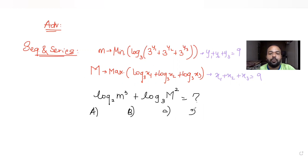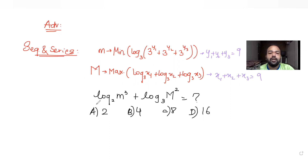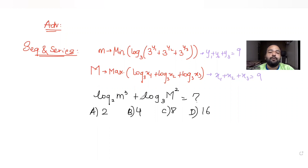The four options given are 2, 4, 8, and 16. We need to figure out which of the following options is the correct value of the expression. Let's first figure out the minimum possible value for small m and the maximum possible value for capital M.